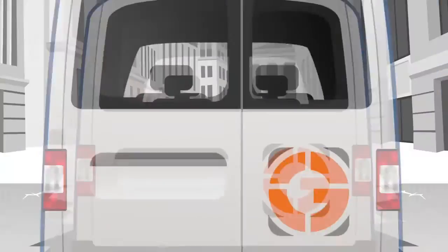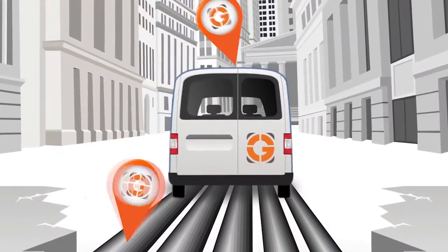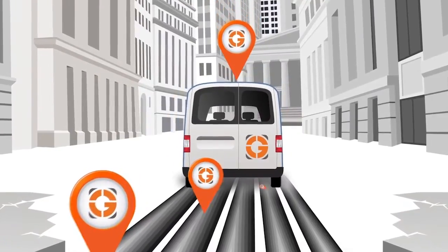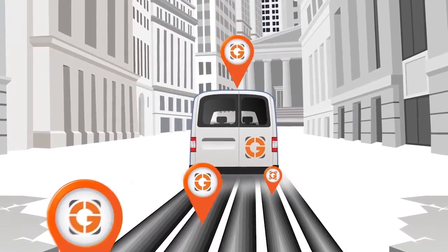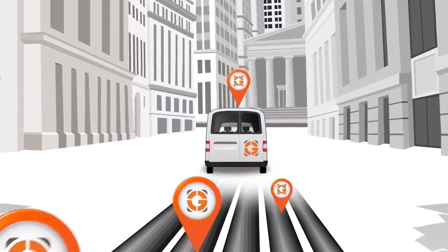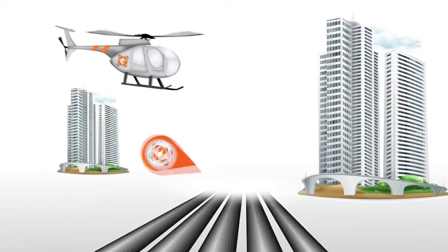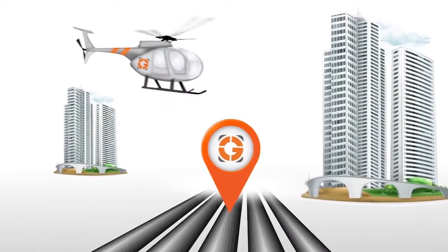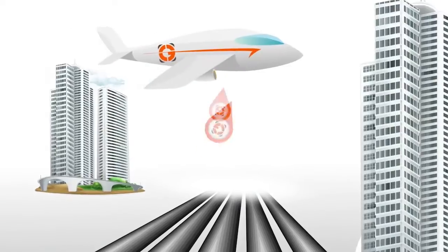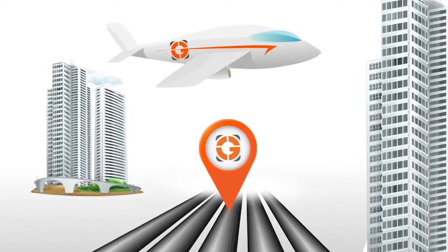Geospatial's technologies allow us to accurately map pipelines by simply walking or driving down a street, or from the air utilizing a helicopter, a fixed-wing aircraft, or even a drone.